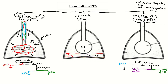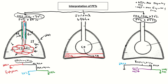When you find an obstructive deficit, here are the three major subtypes. If you see a low DLCO along with an obstructive deficit, that points more toward emphysema. The reason emphysema reduces DLCO is that destruction of the alveolar walls decreases the surface area of the alveoli, which decreases the ability of carbon monoxide to diffuse across that surface area into the capillaries.